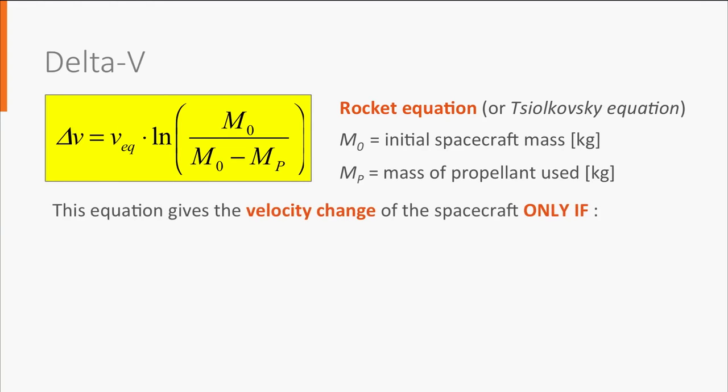This equation gives the velocity change of a spacecraft with initial mass m0, when a mass mp of propellant is used by its propulsion system of given equivalent jet velocity. However, this is true only under a number of assumptions. First, there shall be no external forces acting on the spacecraft, such as gravity or atmospheric drag.